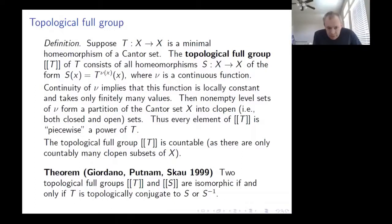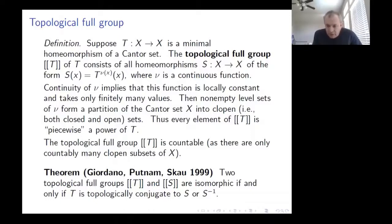Specifically, the topological full groups corresponding to two minimal homeomorphisms are isomorphic if and only if t is topologically conjugate to s or its inverse. So it gives almost complete classification — you cannot determine which way time goes in your dynamical system, but other than that you get complete information. The group as an abstract group encodes the dynamics completely: for any topological property of the transformation, there is a corresponding group-theoretic property of the topological full group.